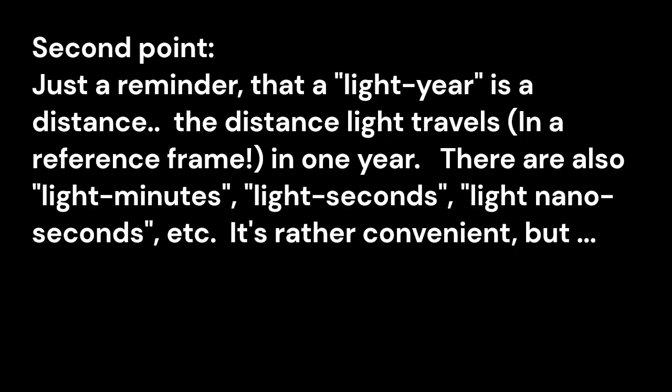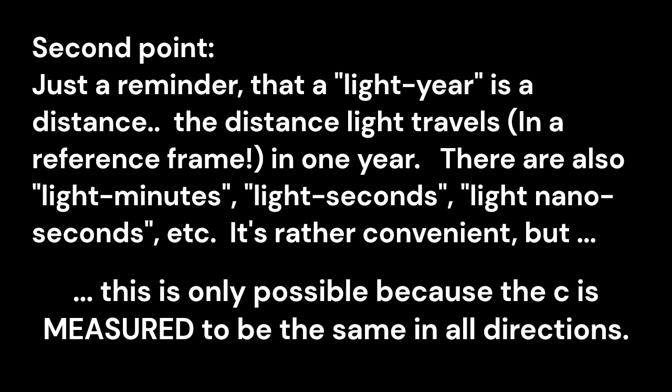And the second point I glossed over a little bit was, I started using the phrase light years, and it's convenient for the twin paradox. Just a reminder, though, a light year is a distance, the distance light travels in a reference frame in one year, so it's not a universal constant. Each reference frame will have its own sense of what a light year is, or there are also light minutes, light seconds. Each reference frame may have a different length.